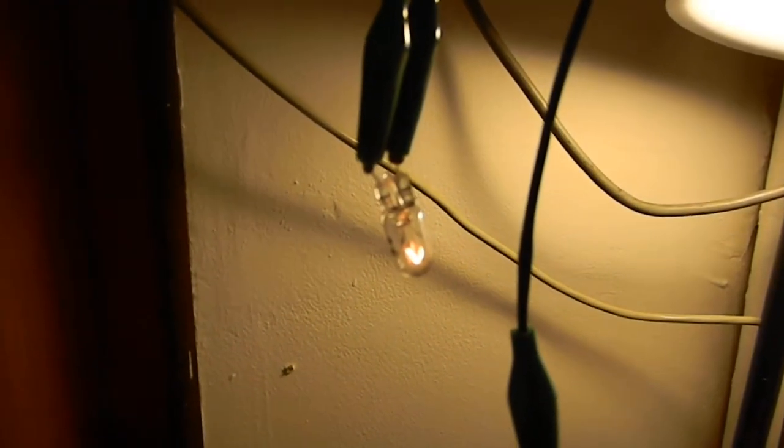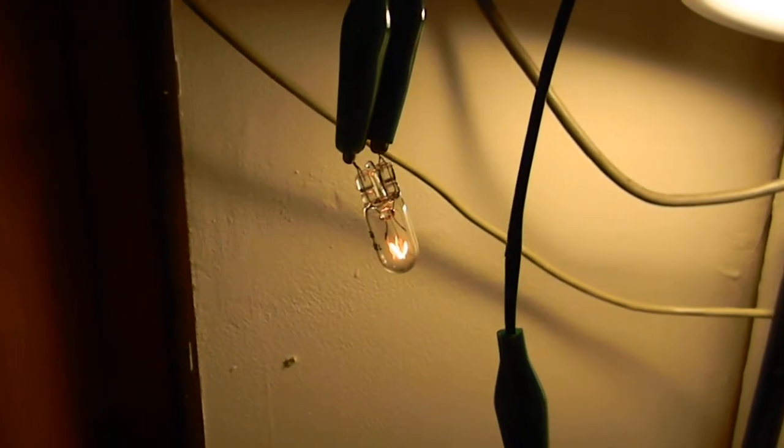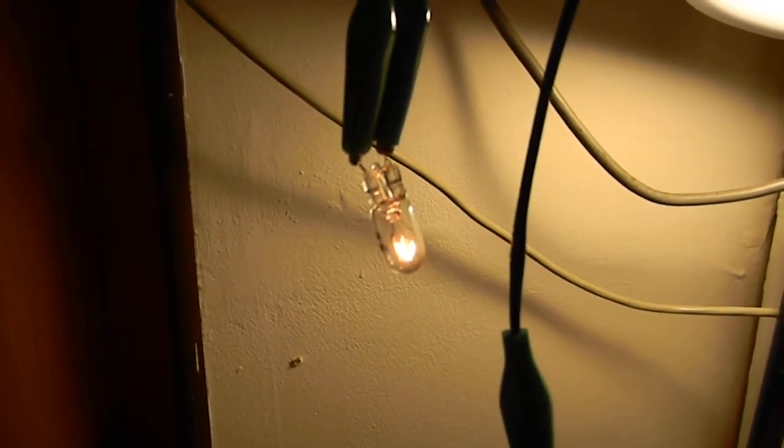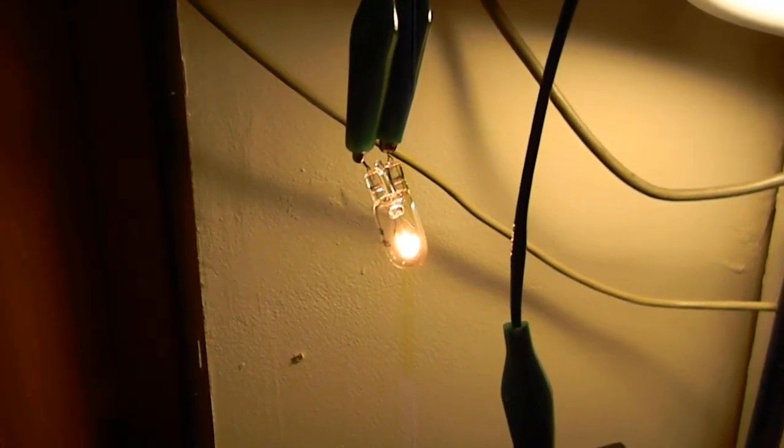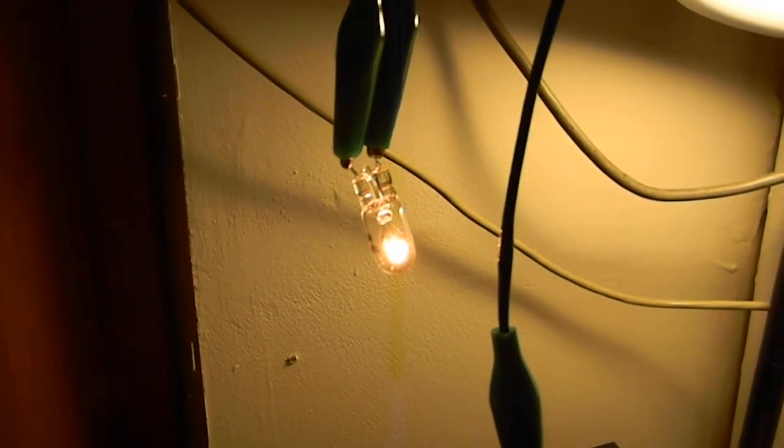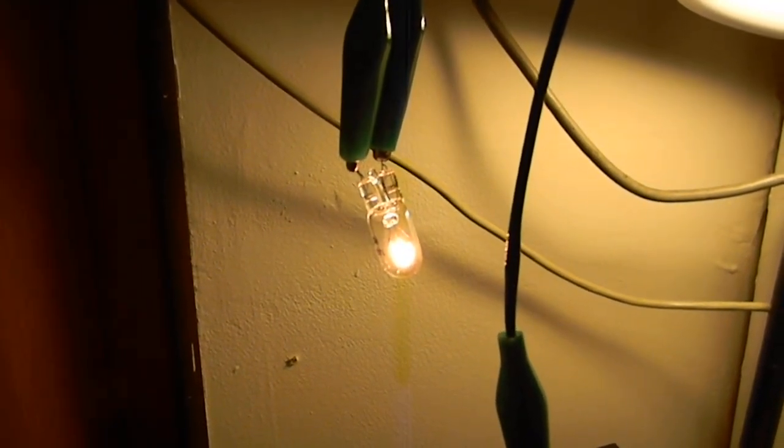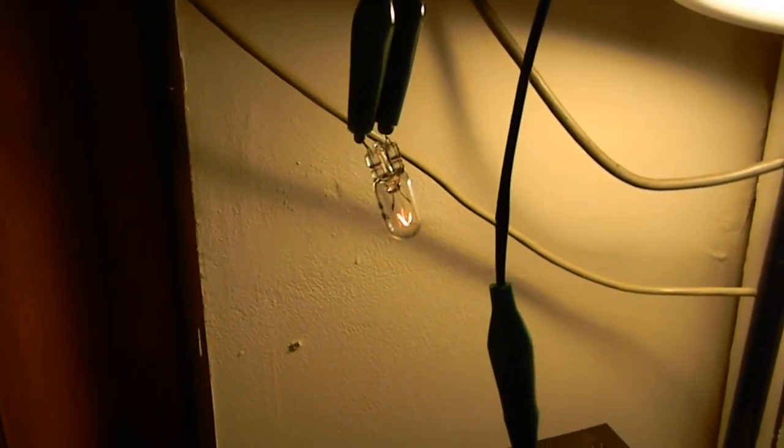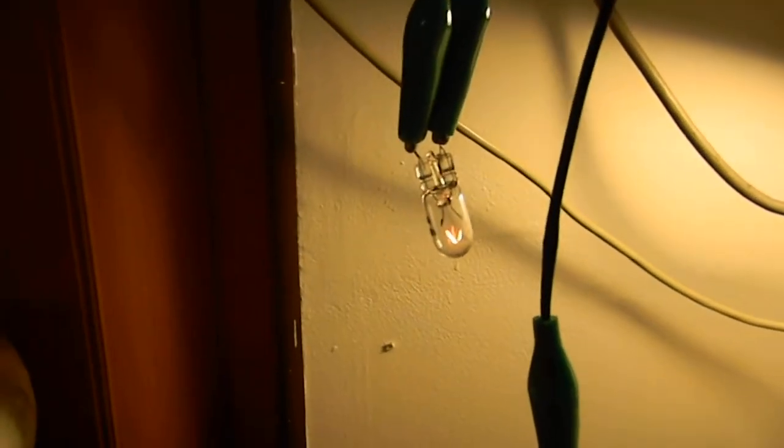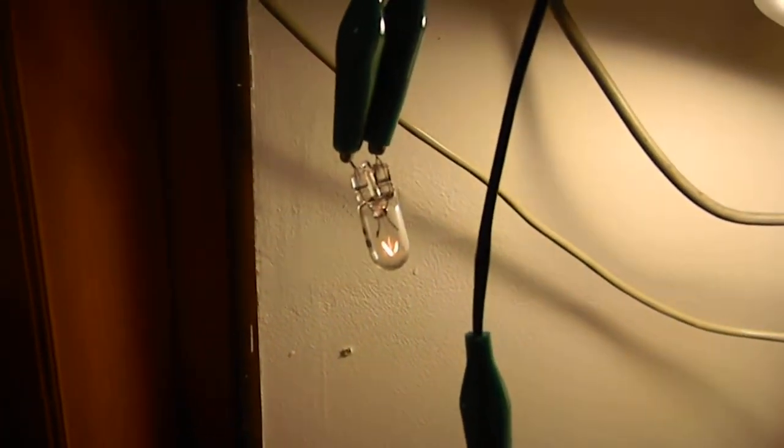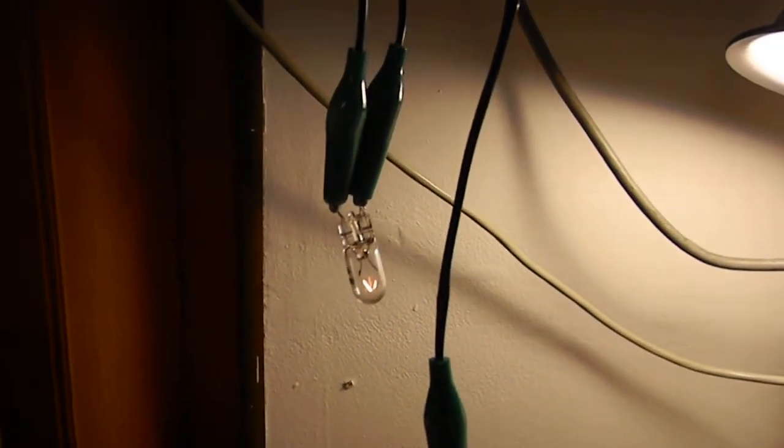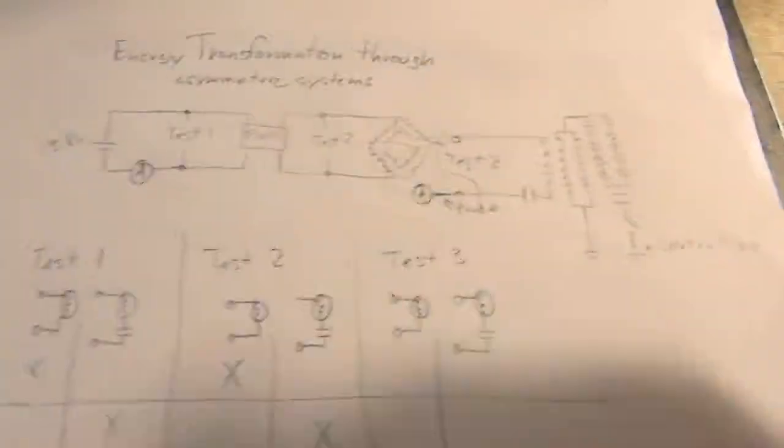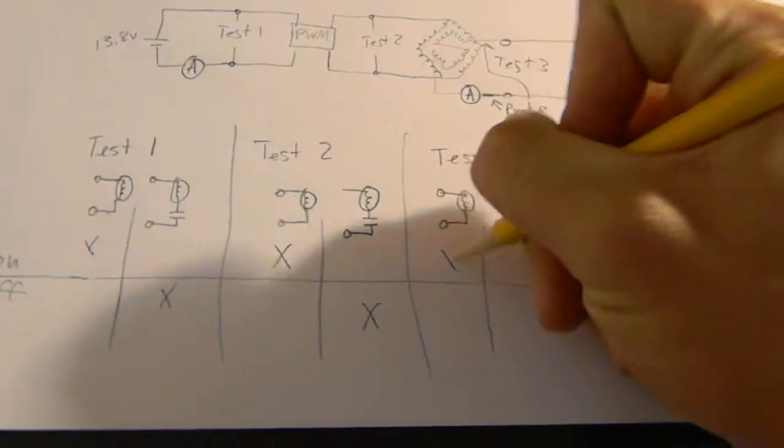Now let's notice how the speed of the motor varies with the amount of light that comes out of the load. Alright. So basically it looked like the light got brighter as the speed went up, and it kind of went a little bit dimmer at full speed. So far the light is on here.